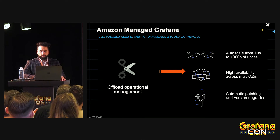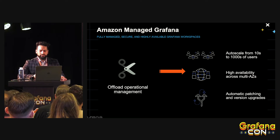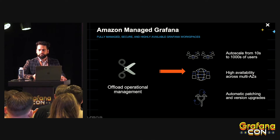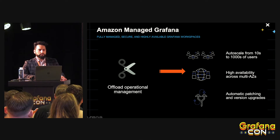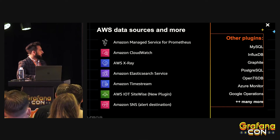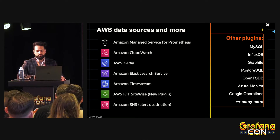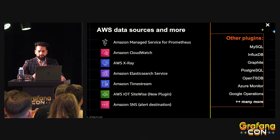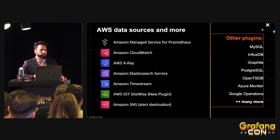With automated version updates and security patching out of the box, you don't have to worry about the underlying infrastructure — it automatically scales as demand increases. Managed Grafana also integrates with AWS Identity Center, previously known as AWS SSO, to ensure that your corporate directory users can get access to dashboards and data sources they have permission to. The service also supports a plethora of other plugins built by Grafana Labs and the community.